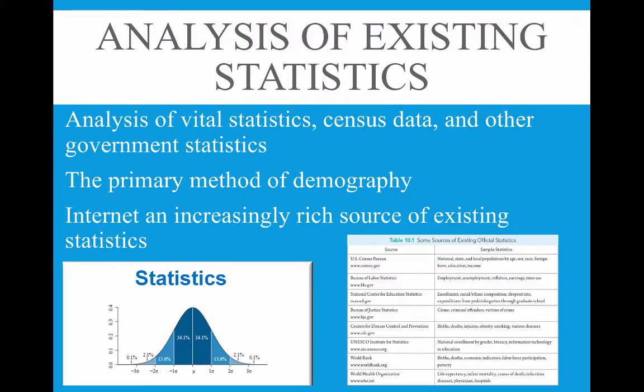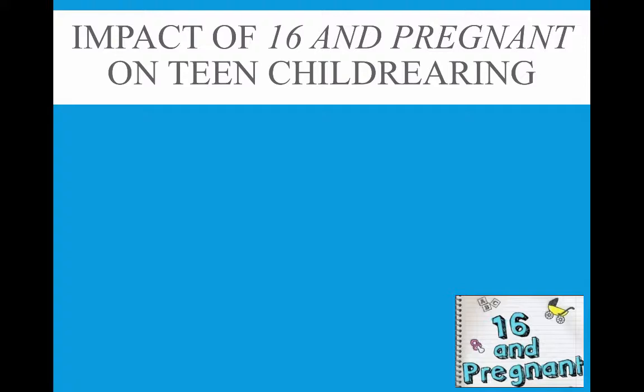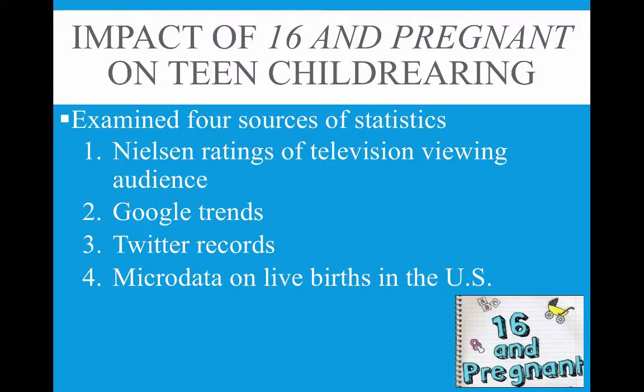To illustrate how this works, the chapter discusses a study on teen pregnancy and the TV show 16 and Pregnant. While in recent years the teen pregnancy rate has dropped since the 1990s, the US still has much higher rates than other developed nations. The biggest rate drop since the 90s was between 2008 and 2012, which happens to be when 16 and Pregnant was on TV. Researchers wondered if there could be a relationship, so they examined four sources of statistics.